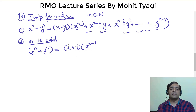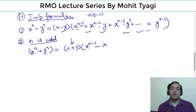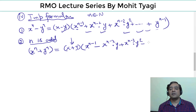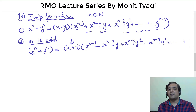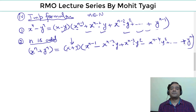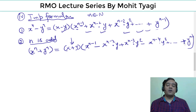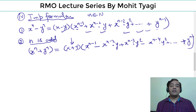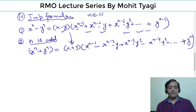In the expansion of xⁿ + yⁿ (n odd), inside the second bracket the terms alternate: + x^(n−2)·y − x^(n−3)·y² + x^(n−4)·y³ − ... and the last term is +y^(n−1). This formula can be derived from the first one by substituting y with (−y).